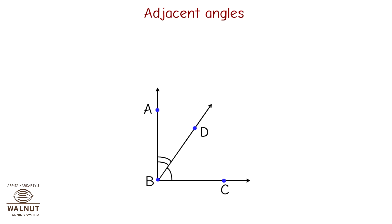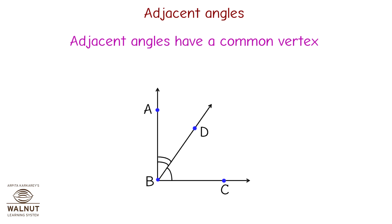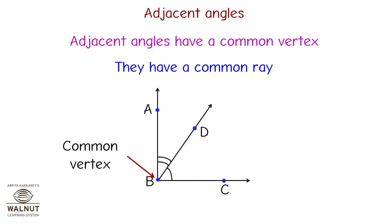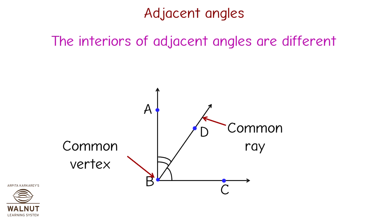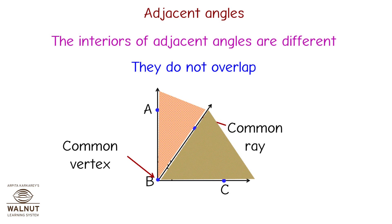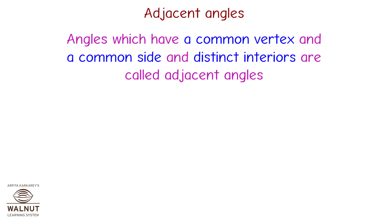Adjacent angles have a common vertex and a common ray. The interiors of adjacent angles are different — they do not overlap. More precisely, angles which have a common vertex, a common side, and distinct interiors are called adjacent angles.